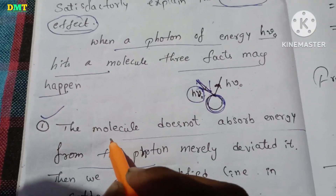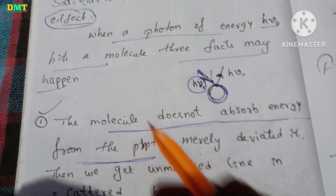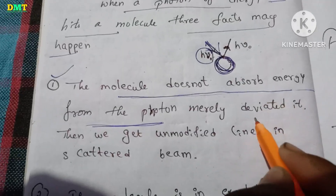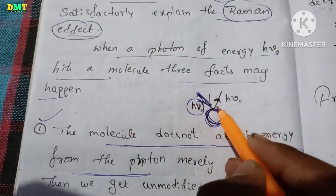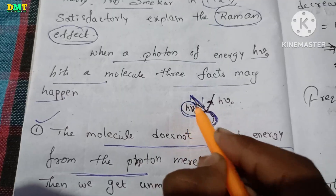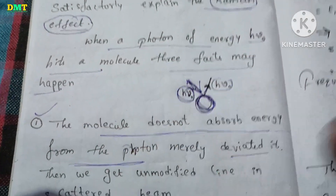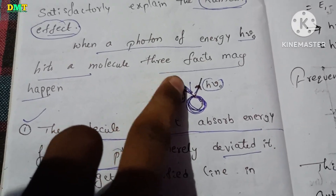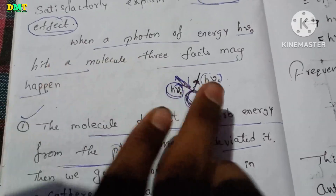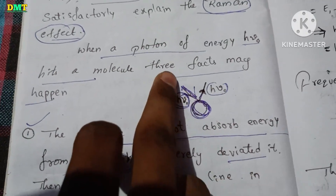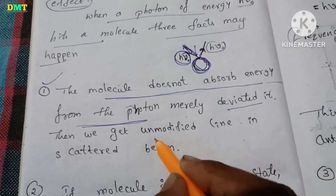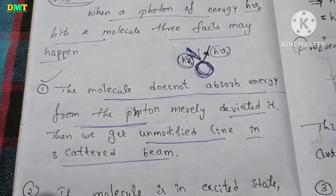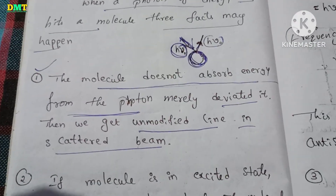In the first case, the molecule does not absorb energy from the photon. The light is not modified. Now the second point: the photon is scattered with the same energy.